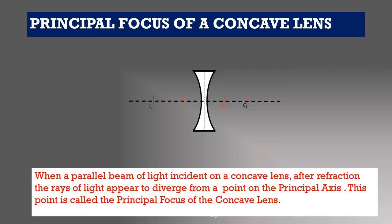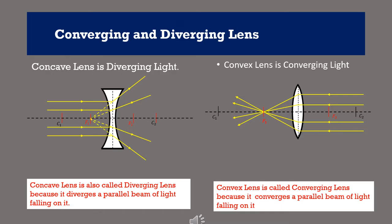Principal focus of a concave lens: when a parallel beam of light is incident on a concave lens, after refraction the rays of light appear to diverge from a point on the principal axis — this point is called the principal focus of the concave lens. A concave lens is called a diverging lens because it diverges a parallel beam of light falling on it, while a convex lens is called a converging lens because it converges a parallel beam of light. Converging means concentrating; diverging means spreading. Compare this with mirrors to find which mirror is converging and which is diverging.